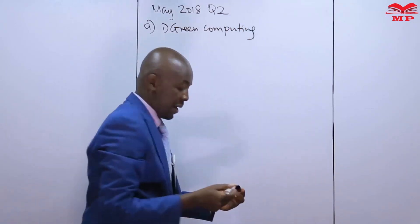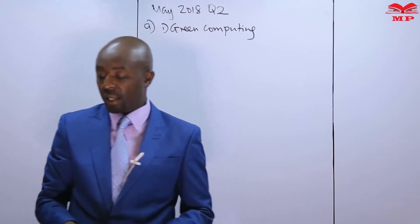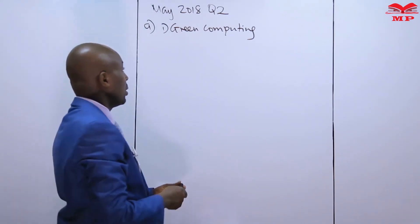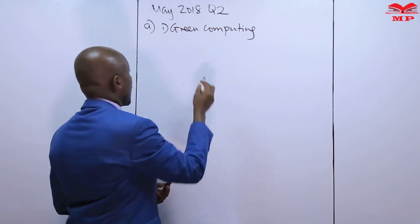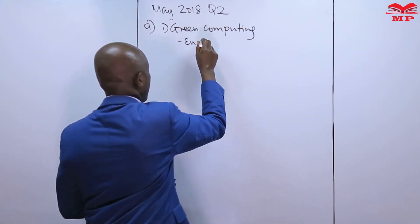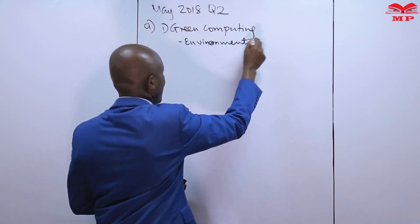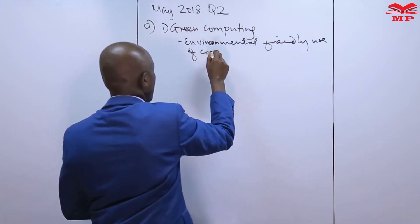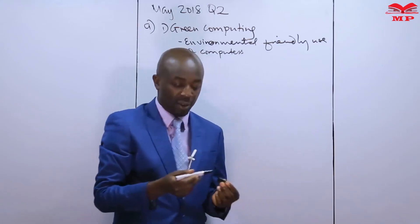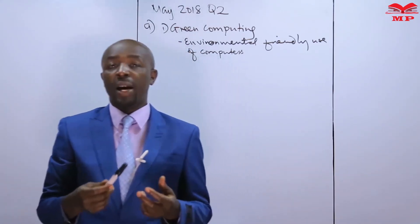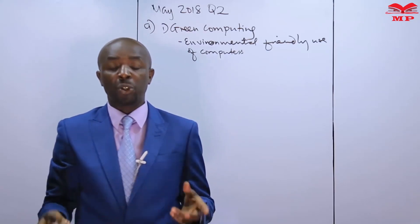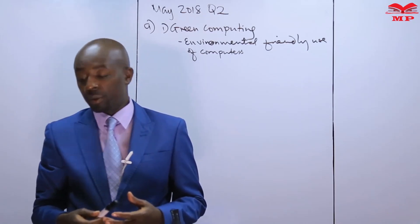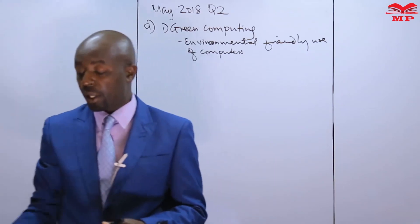Green computing — when we have the word 'green,' we are looking at environmentally friendly. So green computing talks about the environmentally friendly use of computer systems. As I use computer systems, what impact do they have on the environment? Is it pollution? Is it an impact like people experiencing eye injuries?